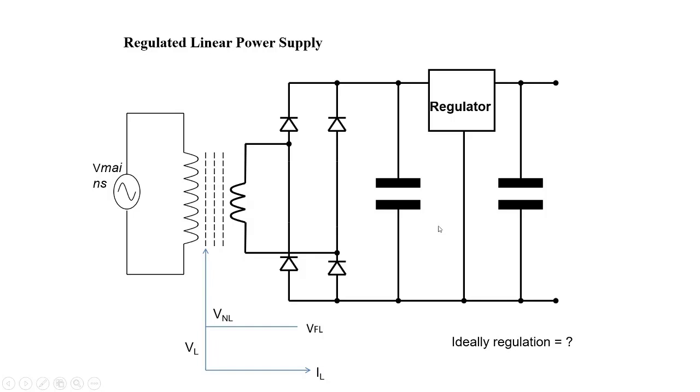The capacitance on input side of a regulator IC is connected whenever the distance of a regulator IC from filter is in centimeters, far away from the filter. Then additional capacitor is added to avoid the transmission line effects.